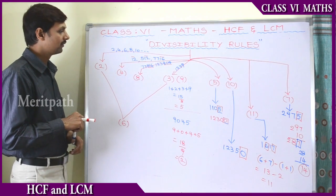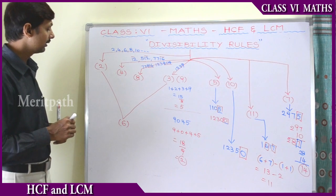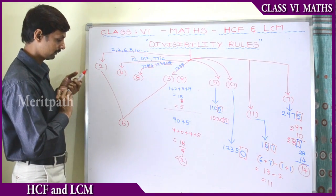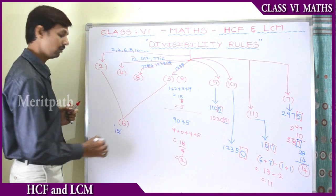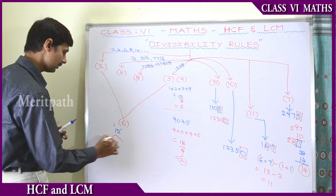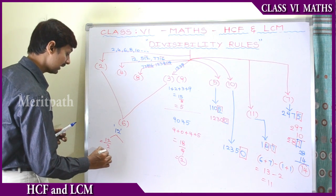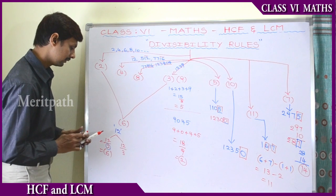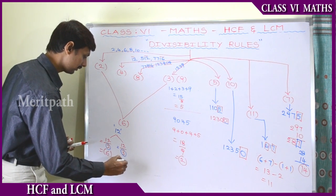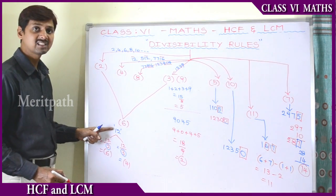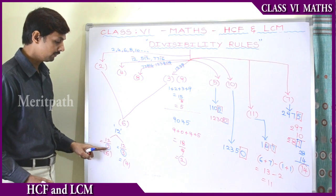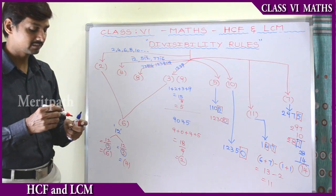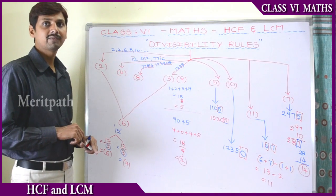Let us see the divisibility property for 6. A number is divisible by 6 if and only if it is divisible by both 2 and 3. For example, take 12. 12÷2 = 6, so it is divisible by 2. And 12÷3 = 4, so it is divisible by 3 also. Since 12 is divisible by both 2 and 3, the whole number 12 is divisible by 6. So the number is divisible by 6 if and only if it is divisible by 2 and 3.